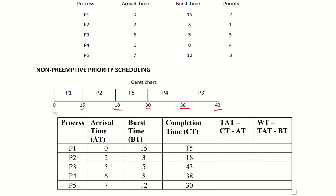Now applying turnaround time equals completion time minus arrival time: P1 completion time is 15, arrival time is 0, so turnaround time is 15. P2 completion time is 18, arrival time is 2, so 18 minus 2 equals 16. P3 completion time is 43, arrival time is 5, so 43 minus 5 equals 38. P4 completion time is 38, arrival time is 6, so 38 minus 6 equals 32. P5 completion time is 30, arrival time is 7, so 30 minus 7 equals 23.